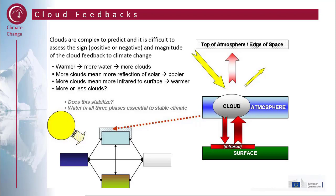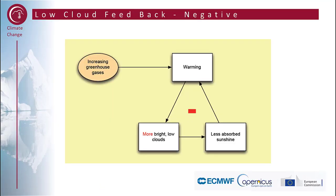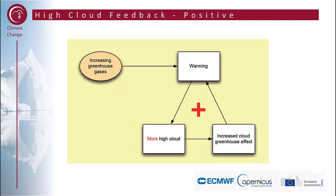In a warmer world there's more water and more clouds. More clouds can mean more reflection of solar radiation, so it gets cooler — but it can also mean more infrared radiation back to the surface, which means it gets warmer. To summarize: the negative feedback is caused by more bright low clouds, which result in less absorbed sunshine. The positive feedback is caused by high clouds, which increase the cloud greenhouse effect.